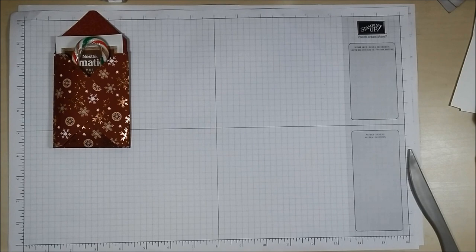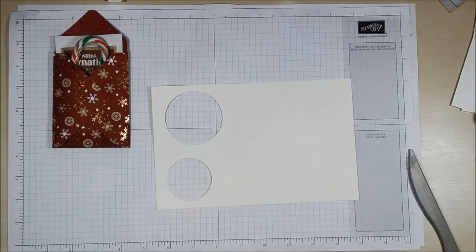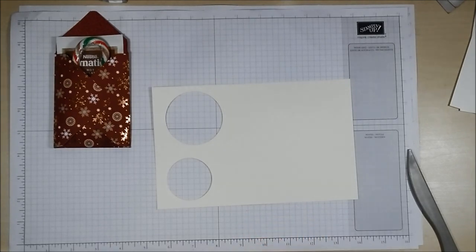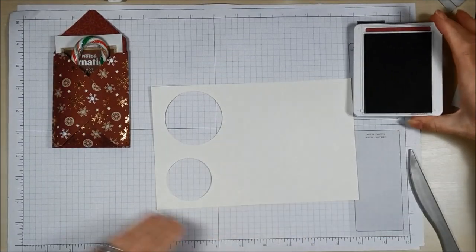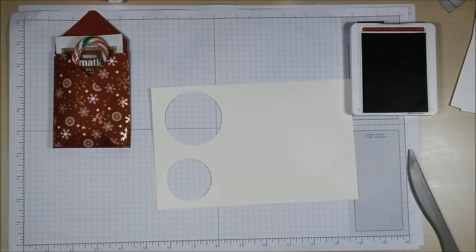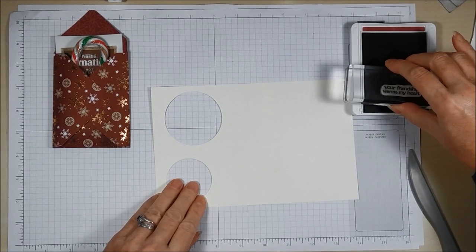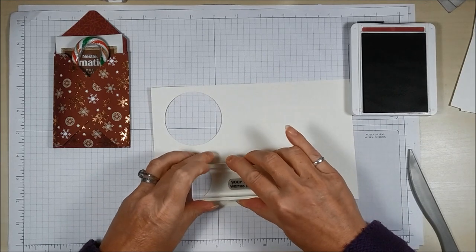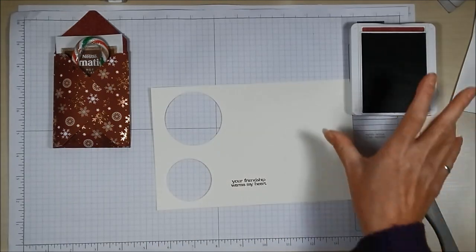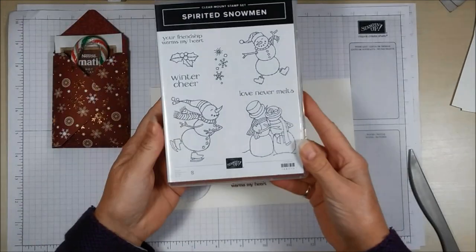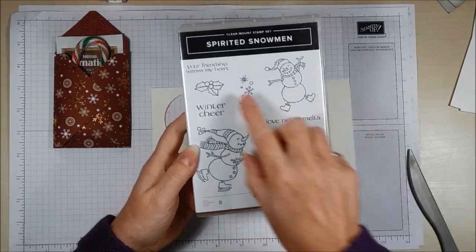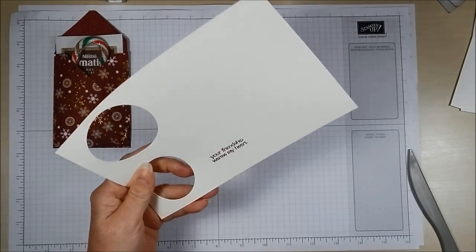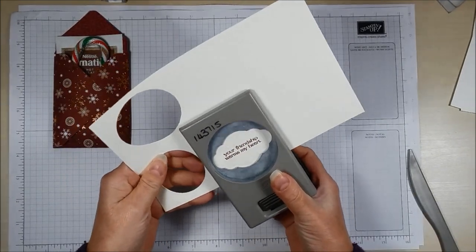Now I'm just going to grab some Very Vanilla card. I have some Merry Mellow ink pad here, and this coordinates with that color in that DSP. And I have chosen this particular sentiment, it says 'your friendship warms my heart.' That's from the Spirited Snowmen stamp set, this one here. And then with the pretty label punch, I'm just going to punch that out.